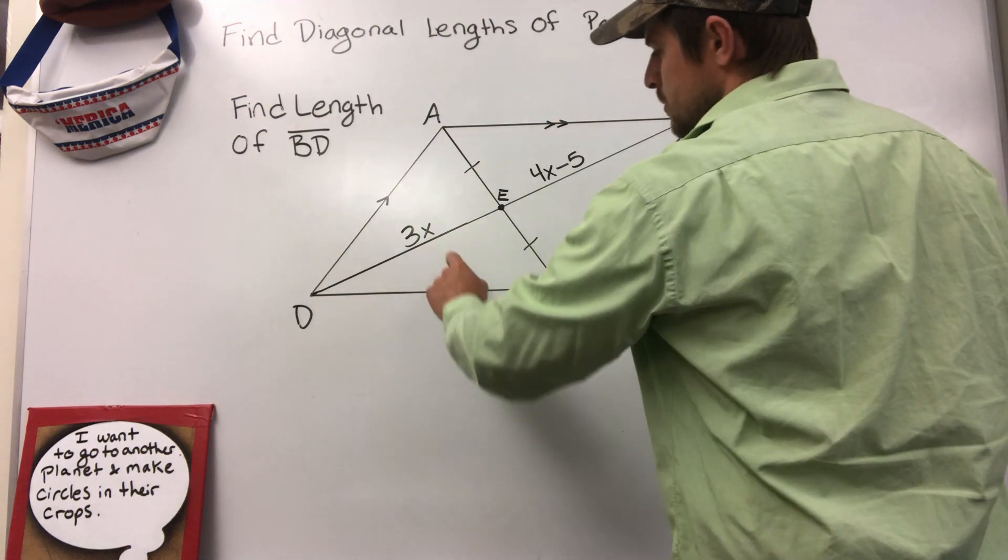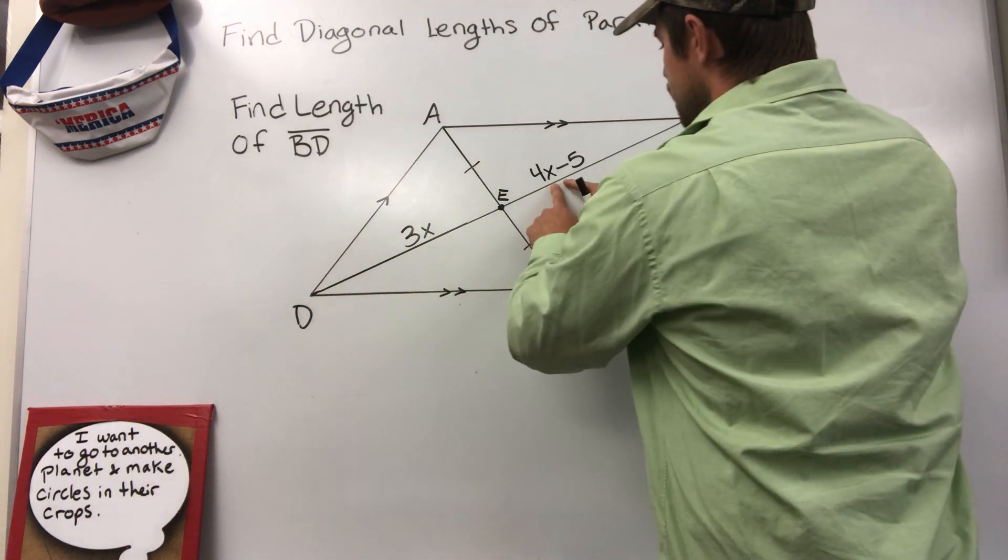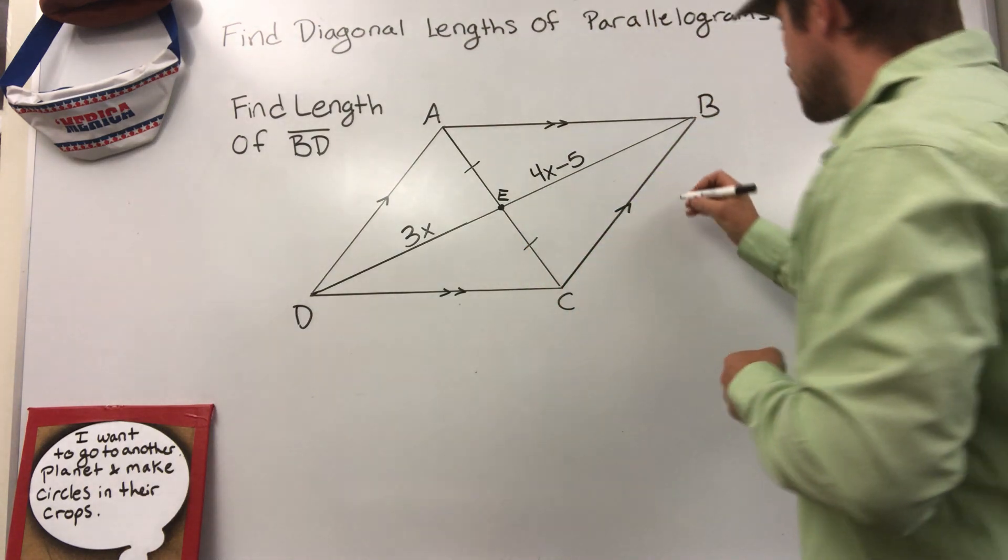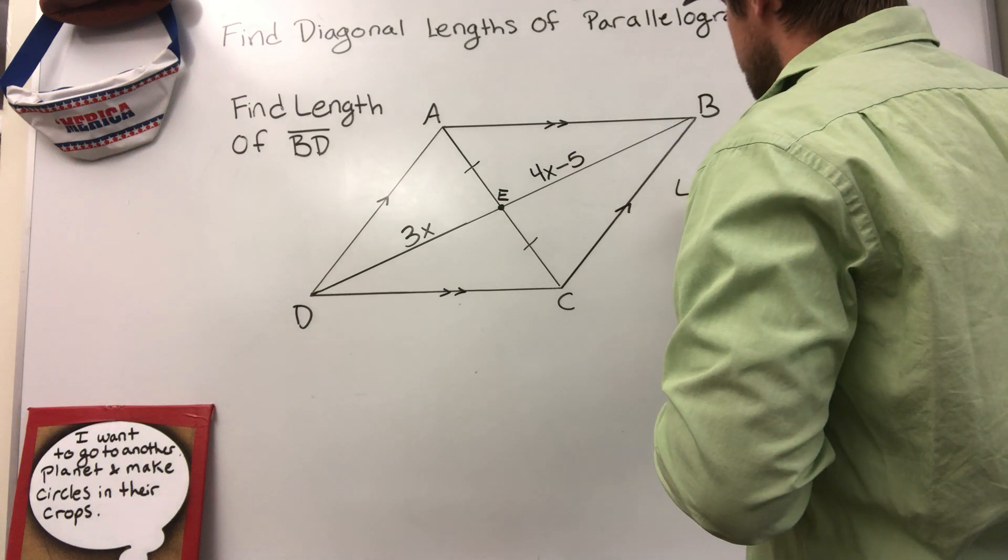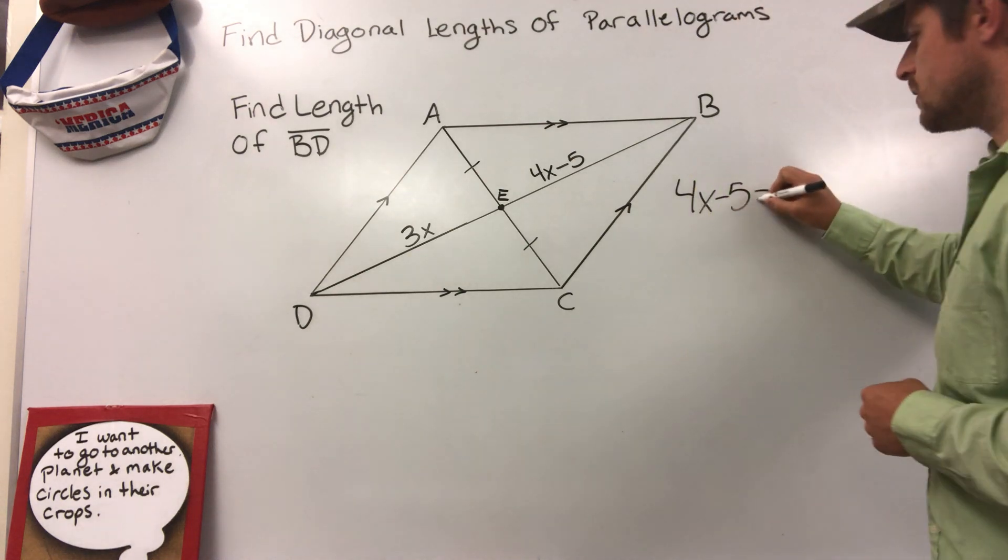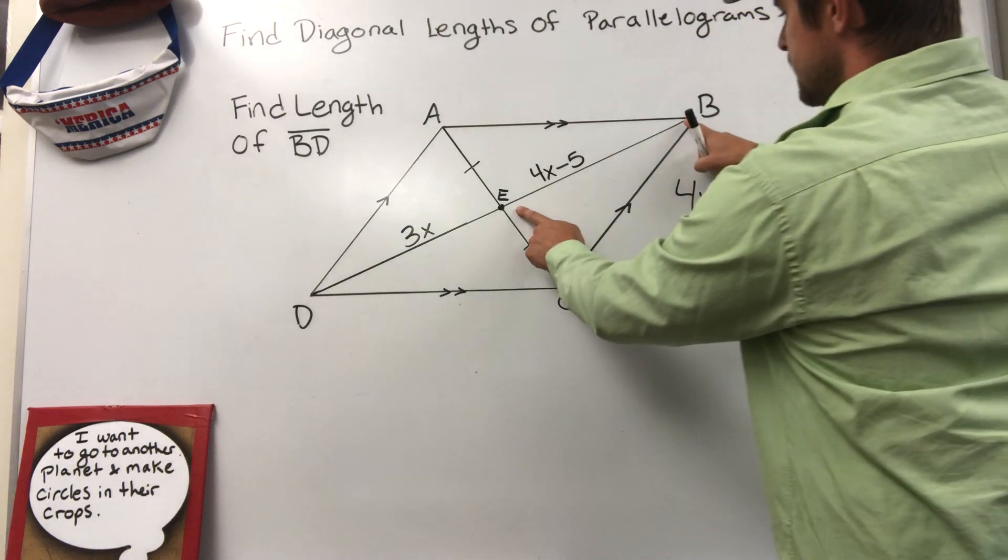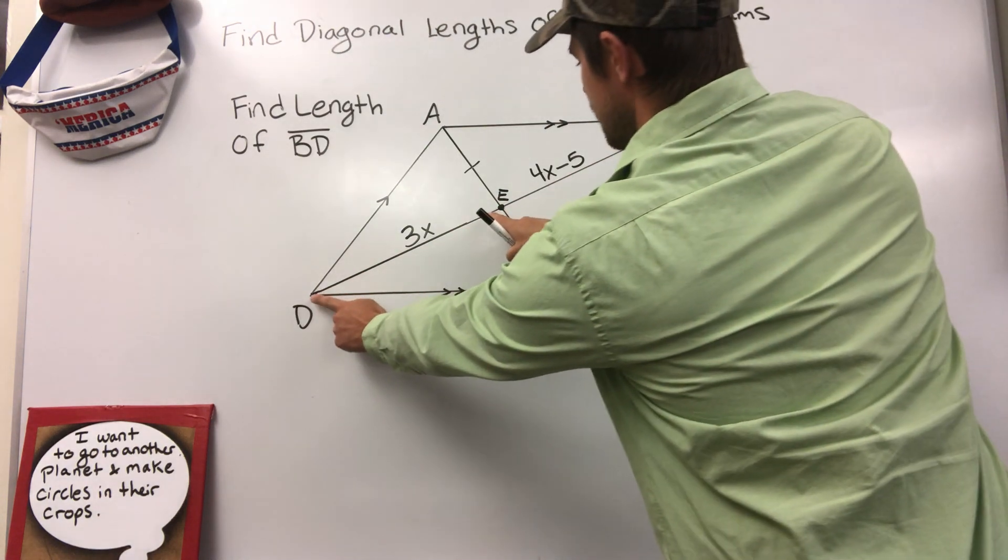What do I know about 3x which is representing DE and 4x minus 5 which is representing BE? We know they're equal. So I'm going to write an equation that represents that: 4x minus 5 equals 3x. This is essentially the same length as this.